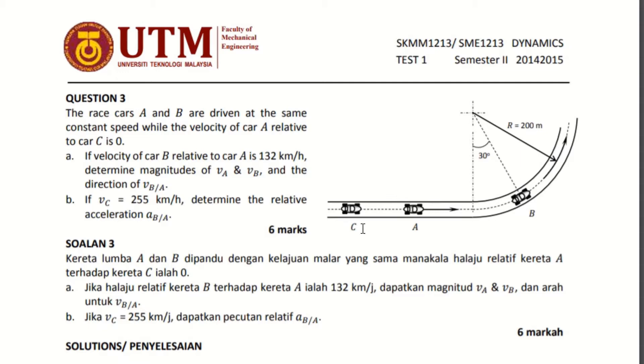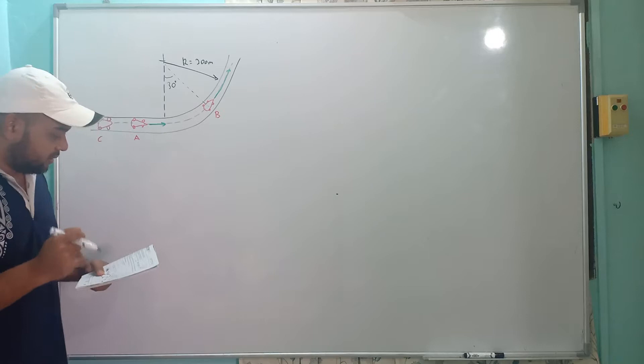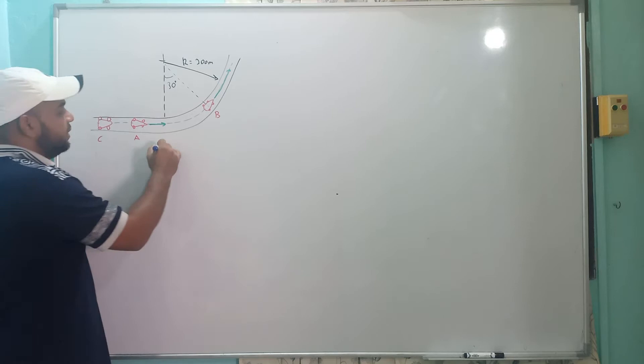The question asks us: first, given that VC is 255, determine the relative acceleration of A, B, and A. So the question states that cars A and B are driven at the same constant speed.